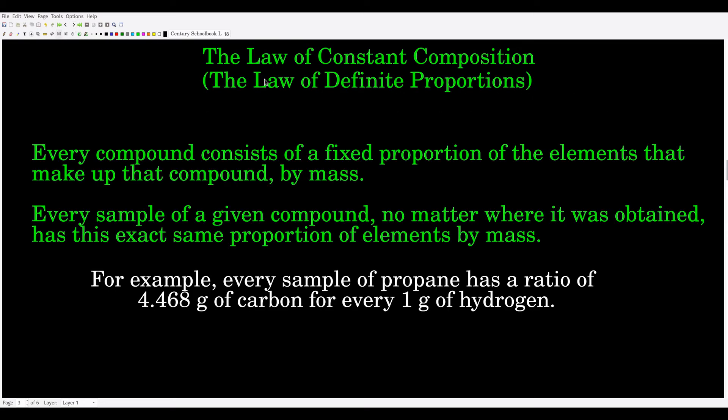Next, we're going to talk about the law of constant composition, also called the law of definite proportions. This says that every compound consists of a fixed proportion of its elements by mass. Every sample of a given compound, no matter where it was obtained, has that exact same proportion. For example, propane always has a ratio of about 4.468 grams of carbon for every one gram of hydrogen.